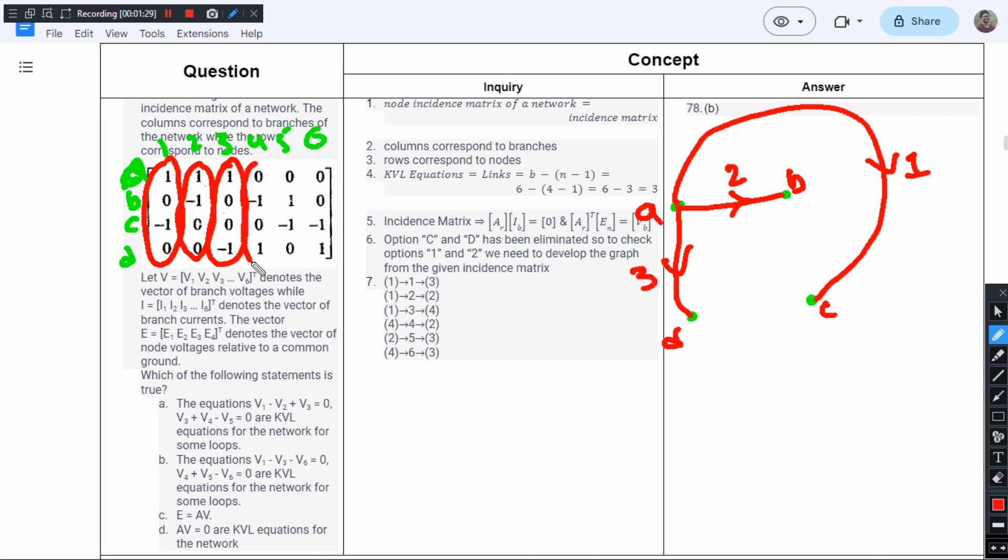Branch 4 connects B and D, and B takes minus. Branch 5 is connecting B and C, C takes minus. The sixth one is connecting C and D, C takes minus. So this is the graph. Now let us observe here.